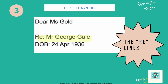Number three on our checklist is the Re lines — and I say lines for a reason. Re is who the letter is regarding, so this is your patient, for example Mr George Gale, and it comes underneath the Dear line. In all the new samples, the date of birth always comes one line below the Re line. This is something fairly new that OET has standardized — before, we sometimes used to write the DOB in brackets alongside, but all the latest samples have the date of birth on the line below. Let's follow what OET is showing us and copy the same thing.